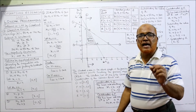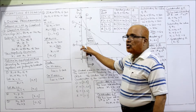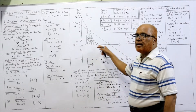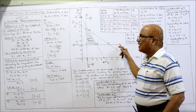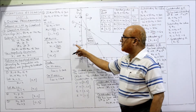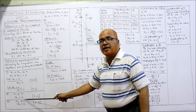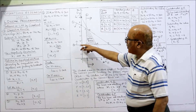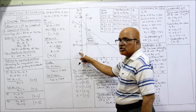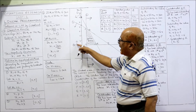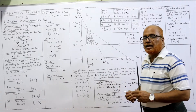Third constraint: x2 = 3, meaning x1 = 0, x2 = 3. Draw a straight line parallel to the x-axis, denoted as line 3. It is greater than or equal to type — away from origin, so the arrow points upward. If it were less than, the arrow would point towards the origin.